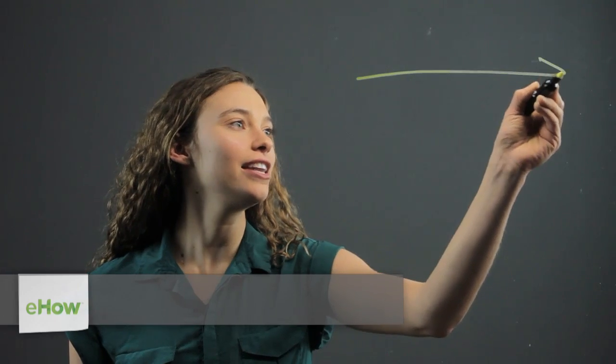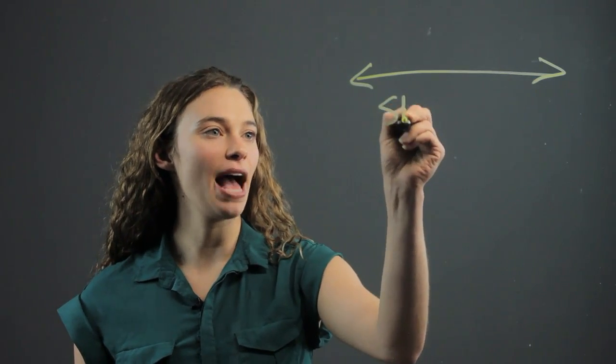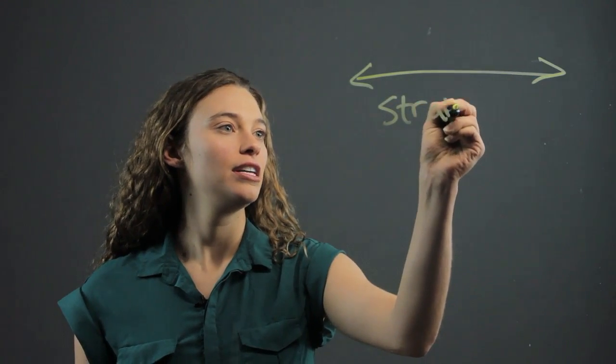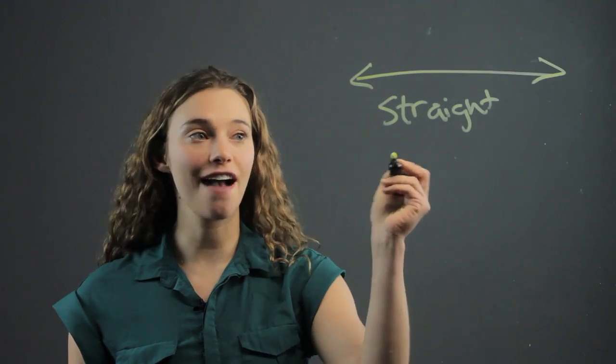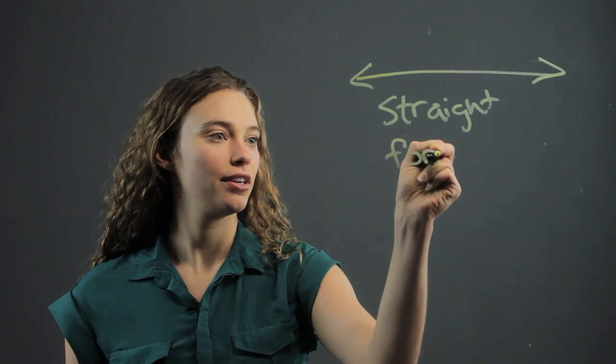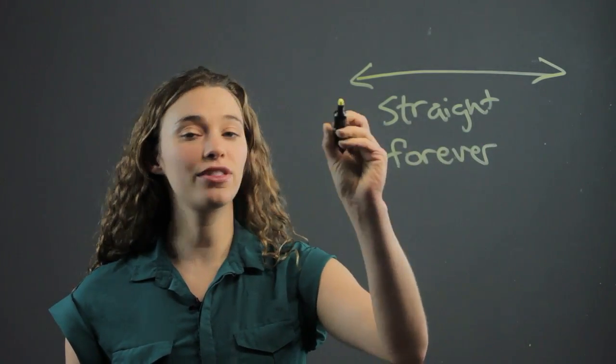Hi, I'm Rachel, and today we're going to be going over what is the characteristic of a line. A line is a straight path that goes on forever in both directions.